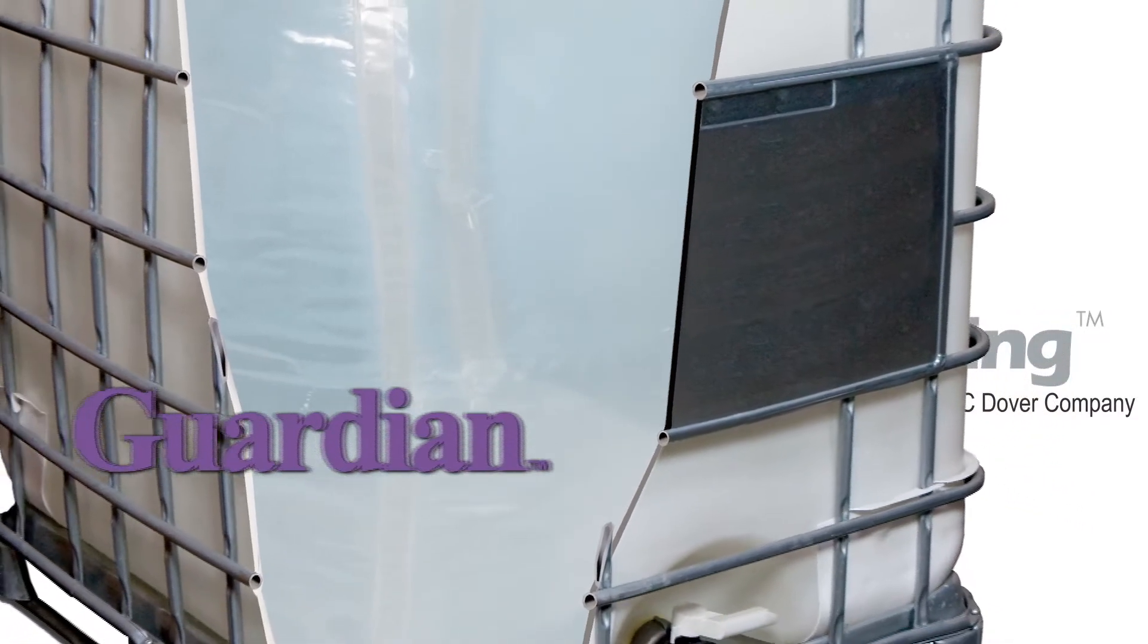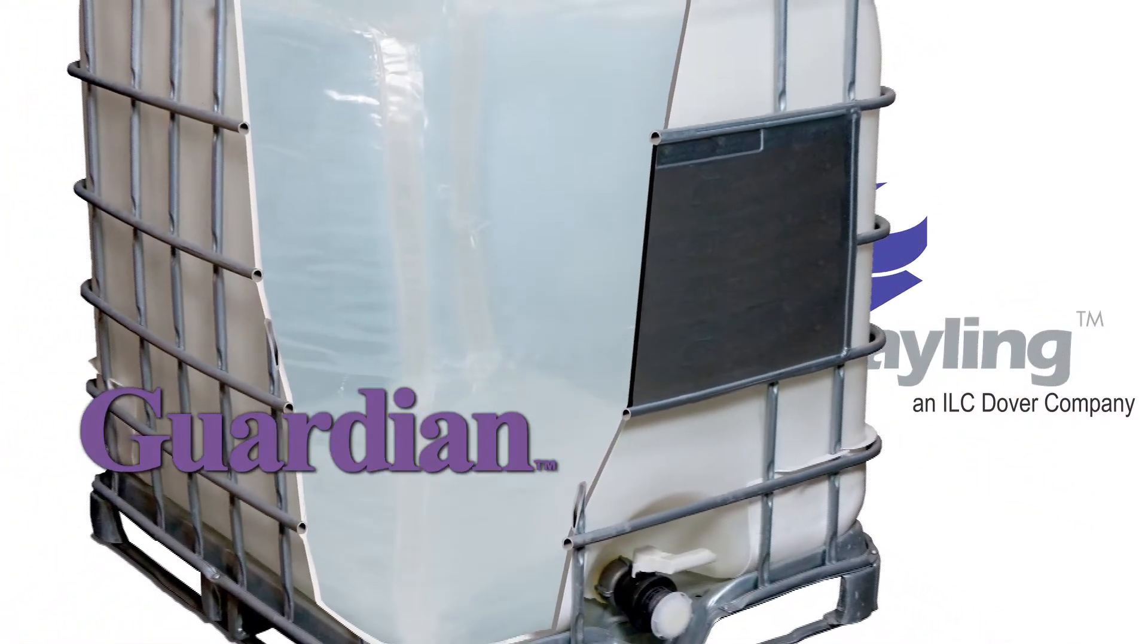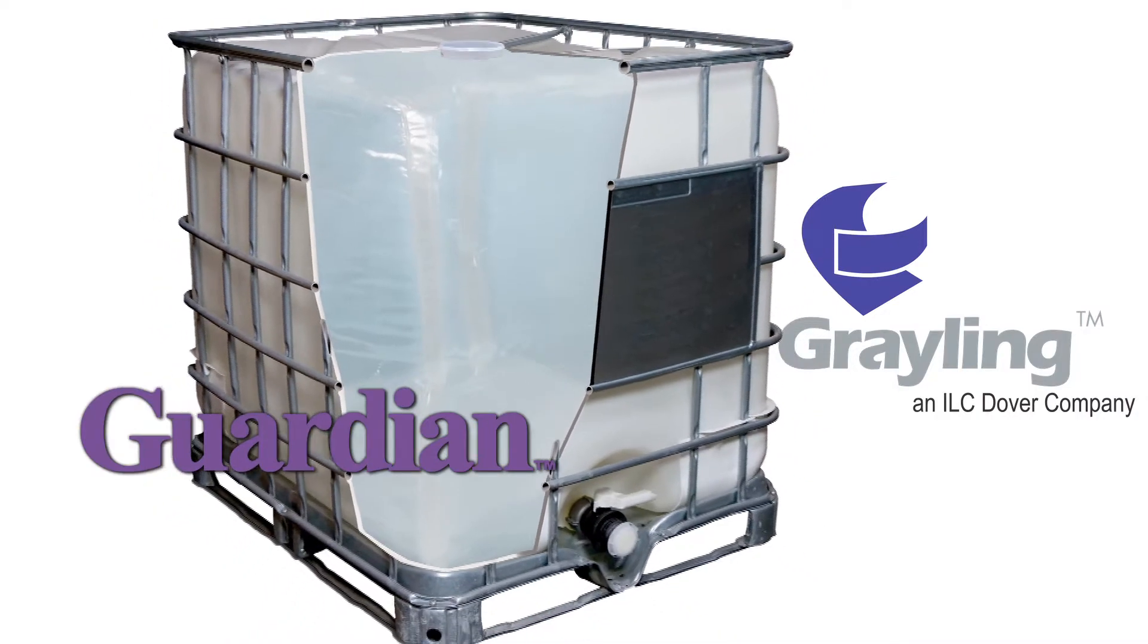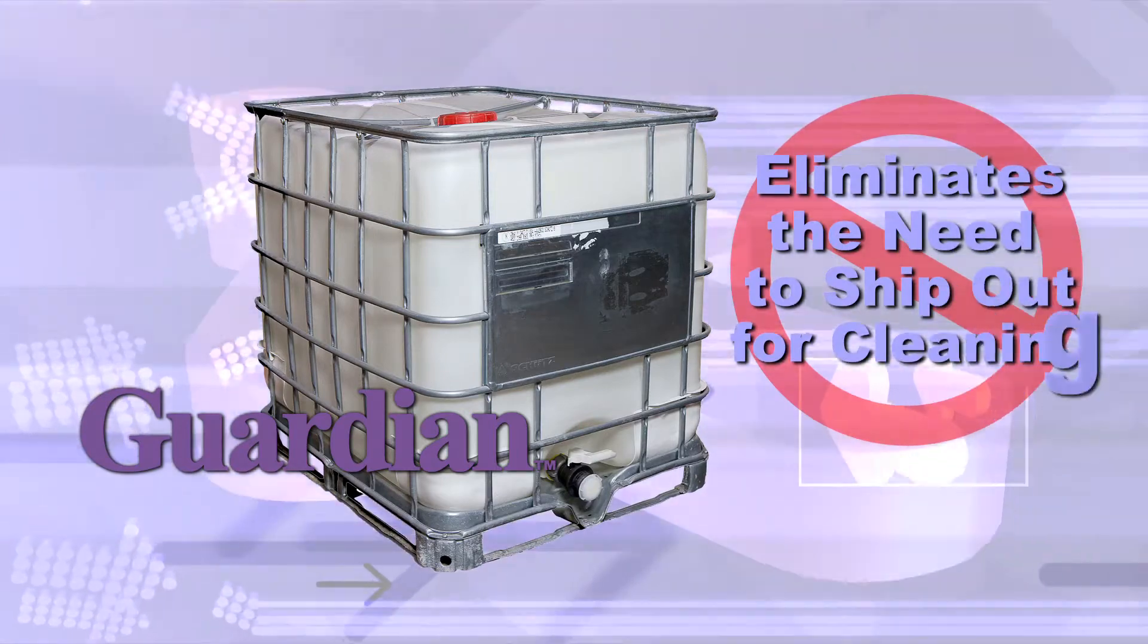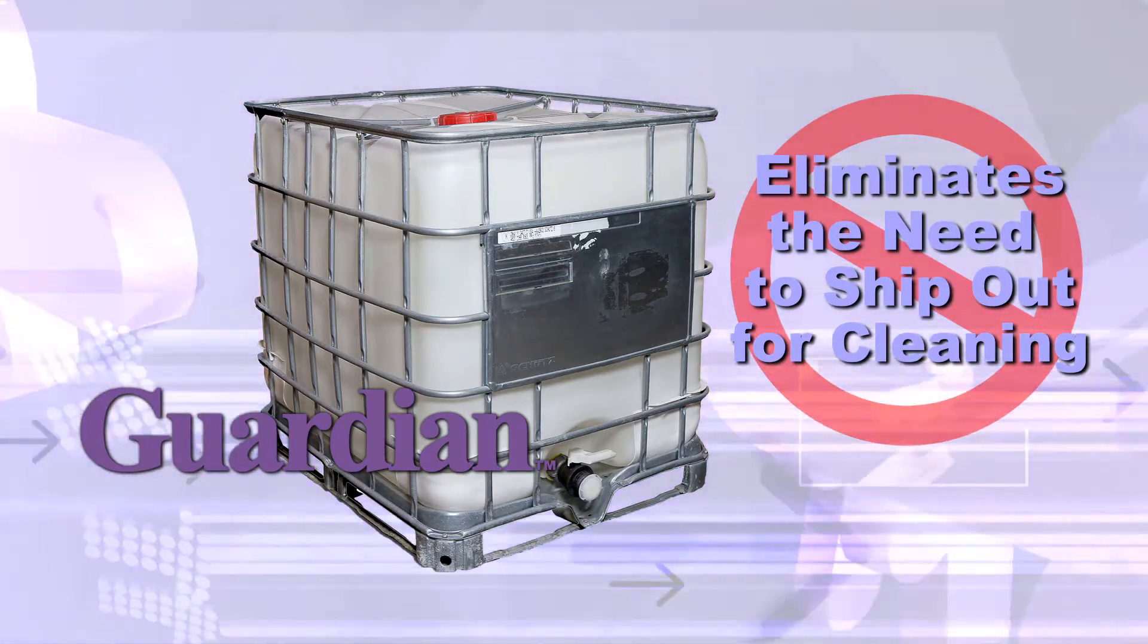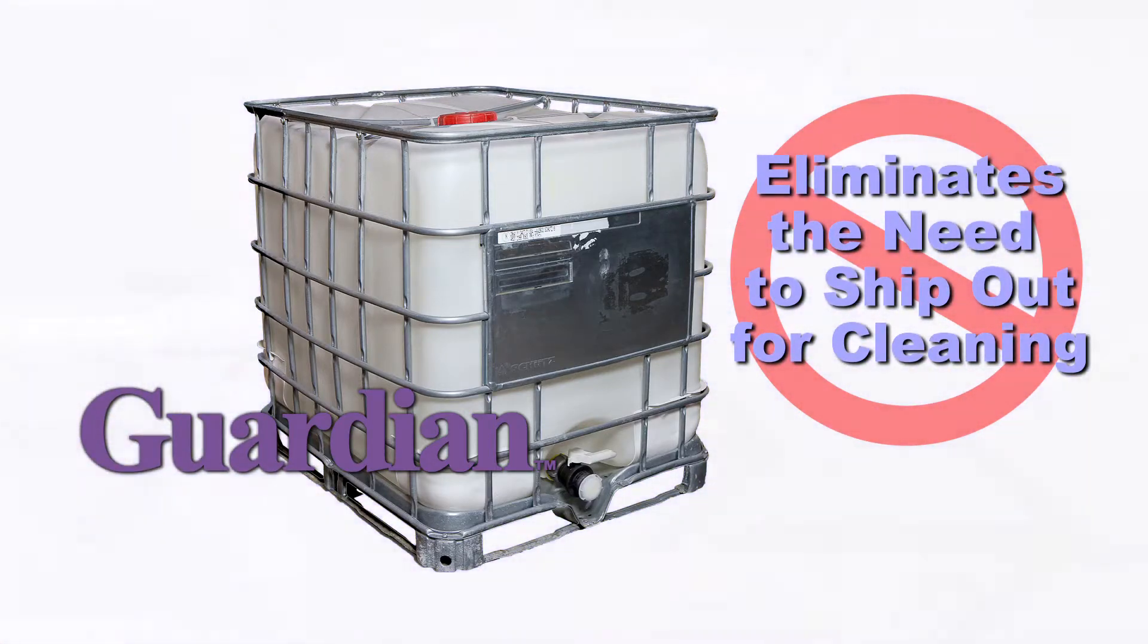The Guardian Bottle and Cage Tote Liner System allows containers like the Schutz, Mauser, and Greif Totes to be reused immediately and eliminates the need to ship an empty container to and from a remote cleaning facility, which keeps the tote in the fleet.